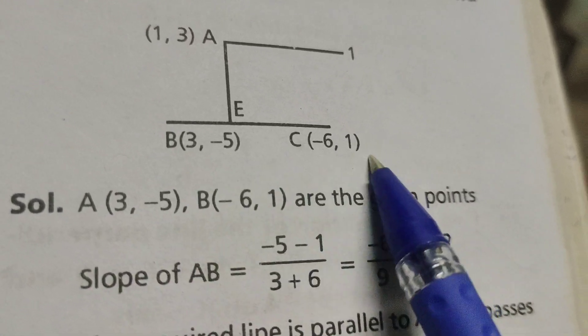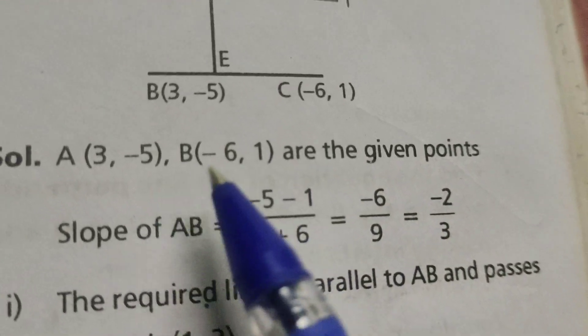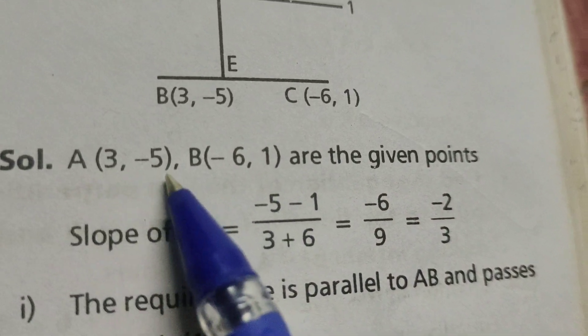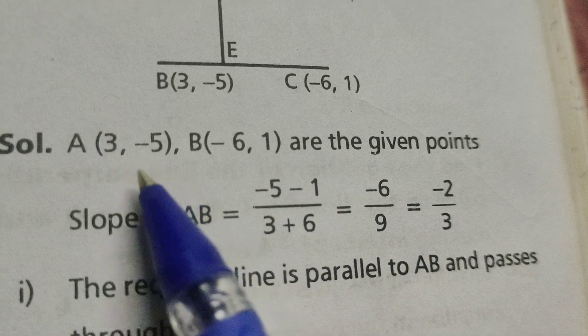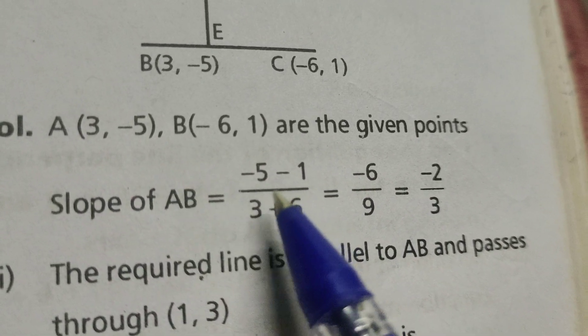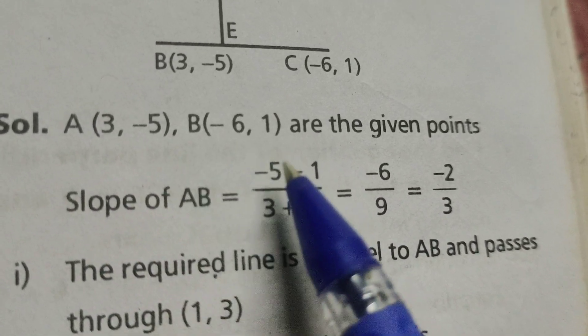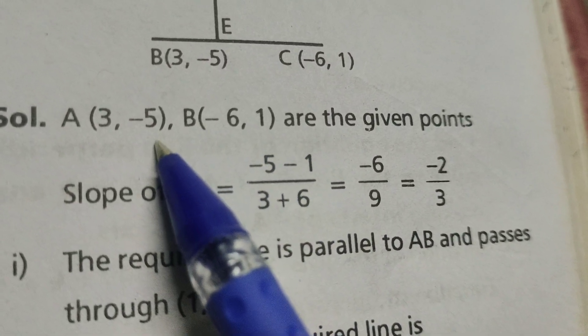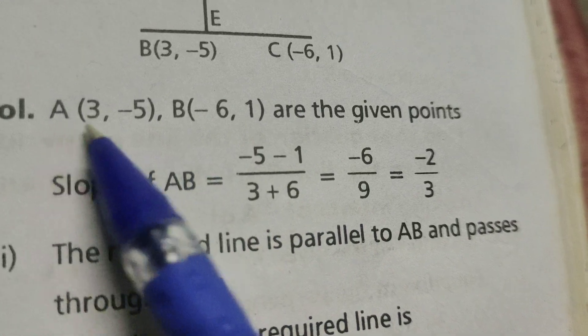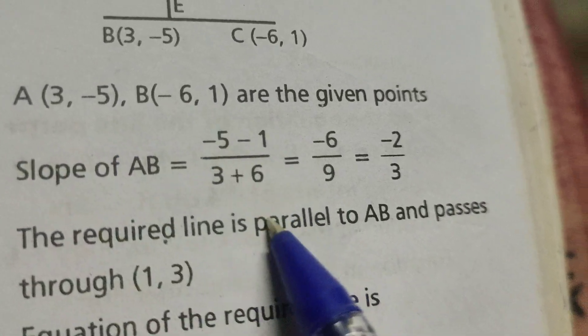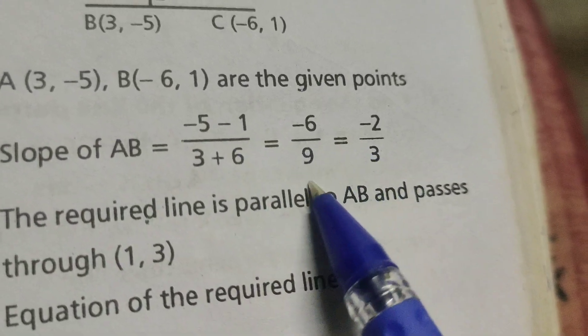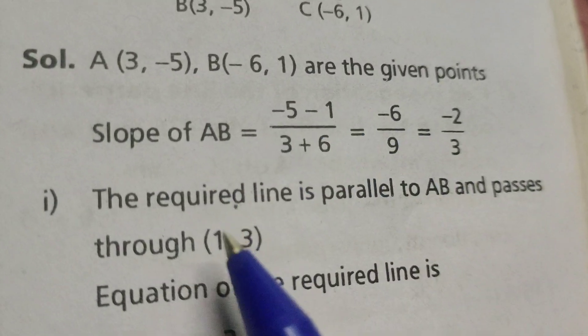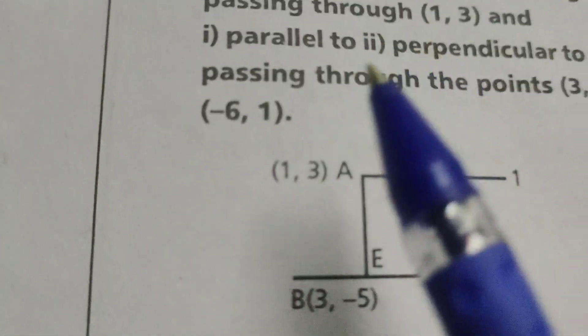Slope of these two points. Consider this is x1, y1, x2, y2. Here -5 minus 1 by formula, y1 minus y2 by x1 minus x2. 3 plus 6 that is -6 by 9, -2 by 3. Here first problem.